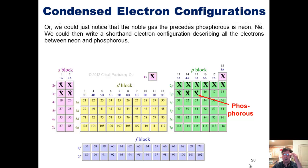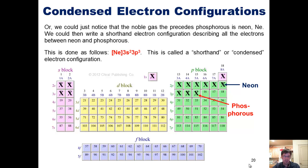Or we could just notice that the noble gas that precedes phosphorus on the periodic table is neon. We could then write the shorthand electron configuration of phosphorus by describing all the electrons between neon and phosphorus. This would be done as follows. We write neon in brackets, and then we just write the electron configuration between neon and phosphorus, which is 3s2, 3p3. This is called a shorthand or condensed electron configuration.